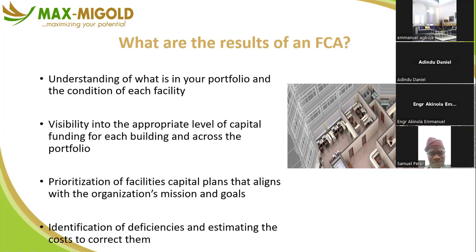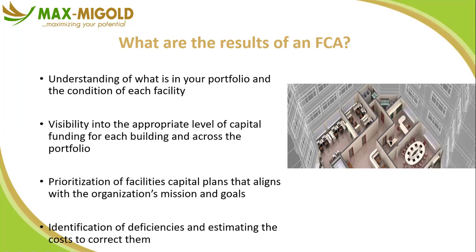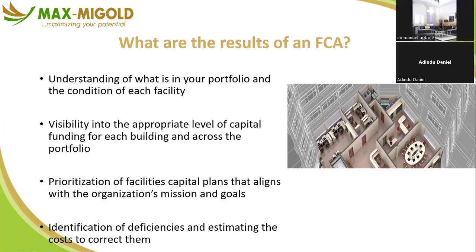A student asks about slide nine where FCA is defined as a process of inspecting each system in a building to understand its condition — three conditions were mentioned: deficiency, remaining useful life, and facility condition index. The student understands deficiency but wants to know how to determine the remaining useful life of equipment and what the facility condition index means.